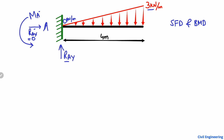To find RAy, since there is only one support, all the load will be taken by it. There is a uniformly varying load of 3 kilonewton per meter acting on the beam. We find the area of the triangular load: area = ½ × base × height = ½ × 4 m × 3 kN/m = 6 kilonewton. So RAy = 6 kN.